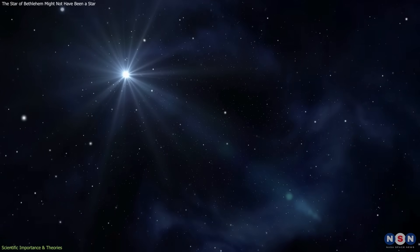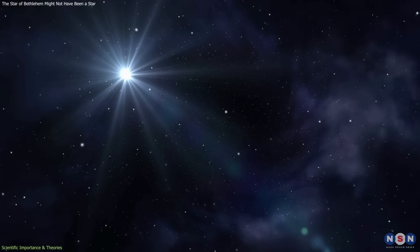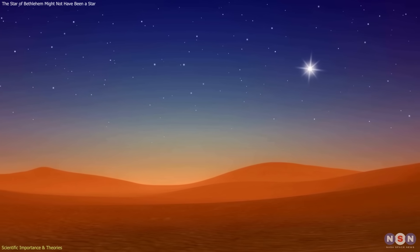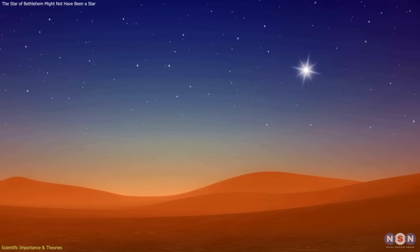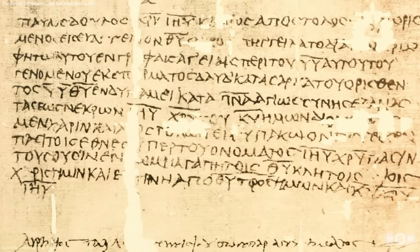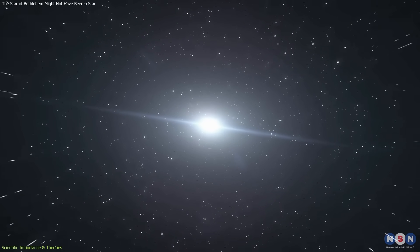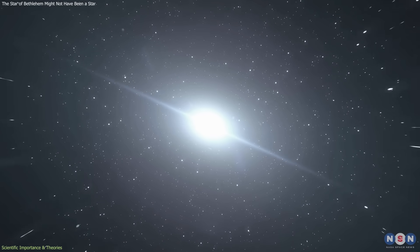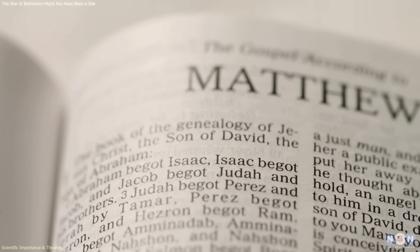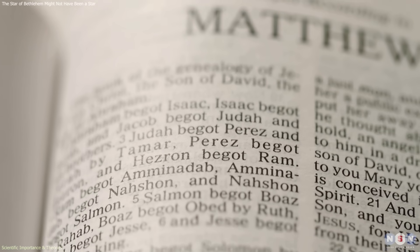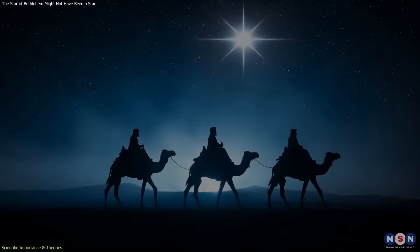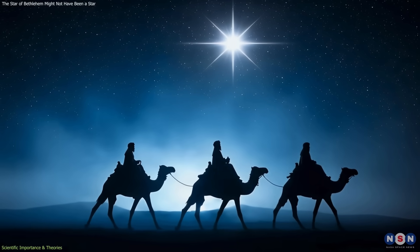There are, however, clear limitations. The Chinese records do not state that the comet became bright enough to dominate the daytime sky, and there are no surviving Roman or Middle Eastern texts that explicitly describe an object behaving in such an extraordinary way. Additionally, the Gospel of Matthew was written decades after the events it describes, making direct historical correlation difficult.